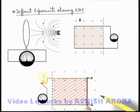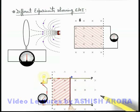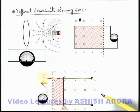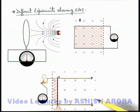If the rod is stopped, the bulb stops glowing and the galvanometer deflection comes to zero, because no change in flux takes place. If the rod is displaced in the opposite direction, the bulb glows again but the direction of deflection in the galvanometer is opposite.